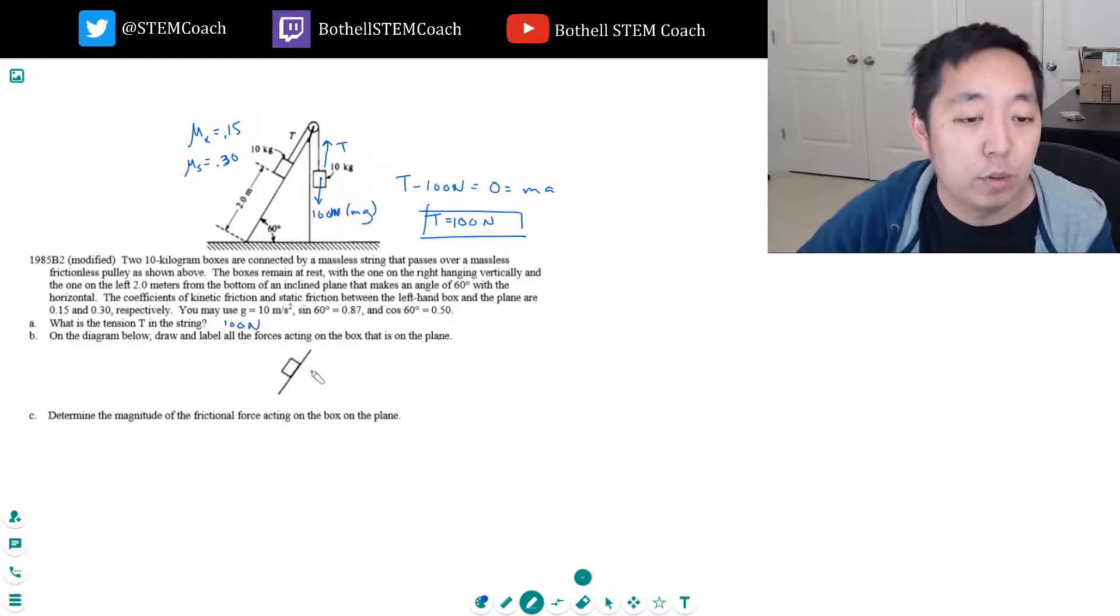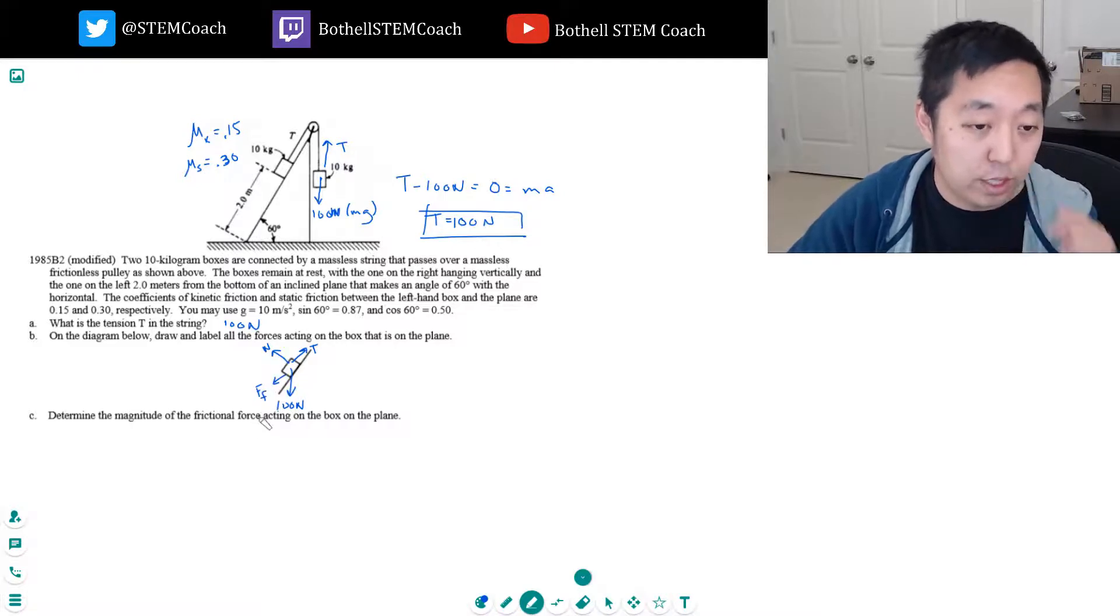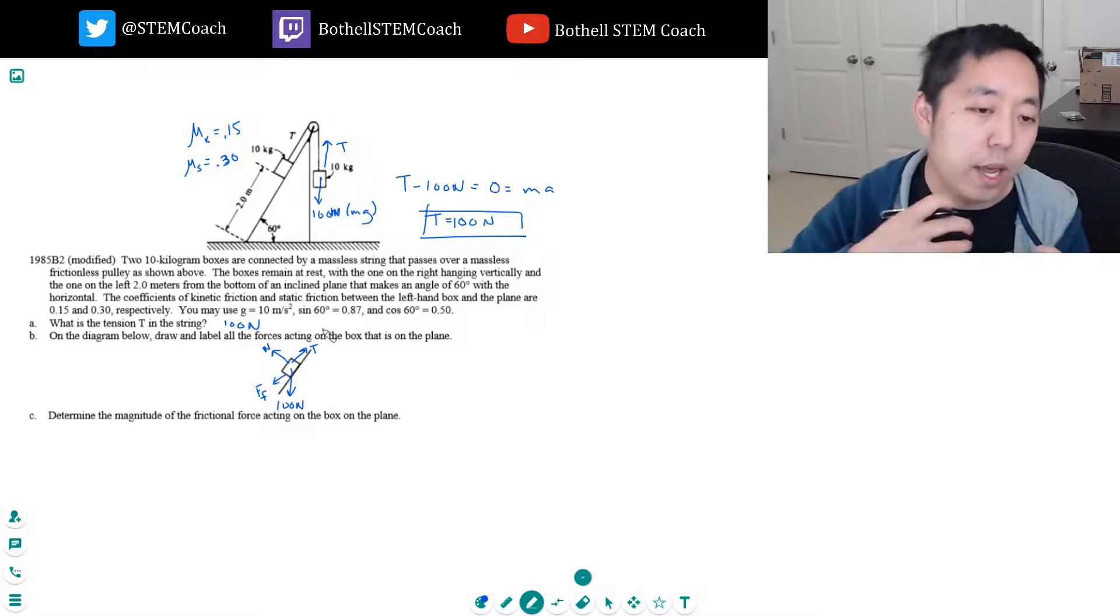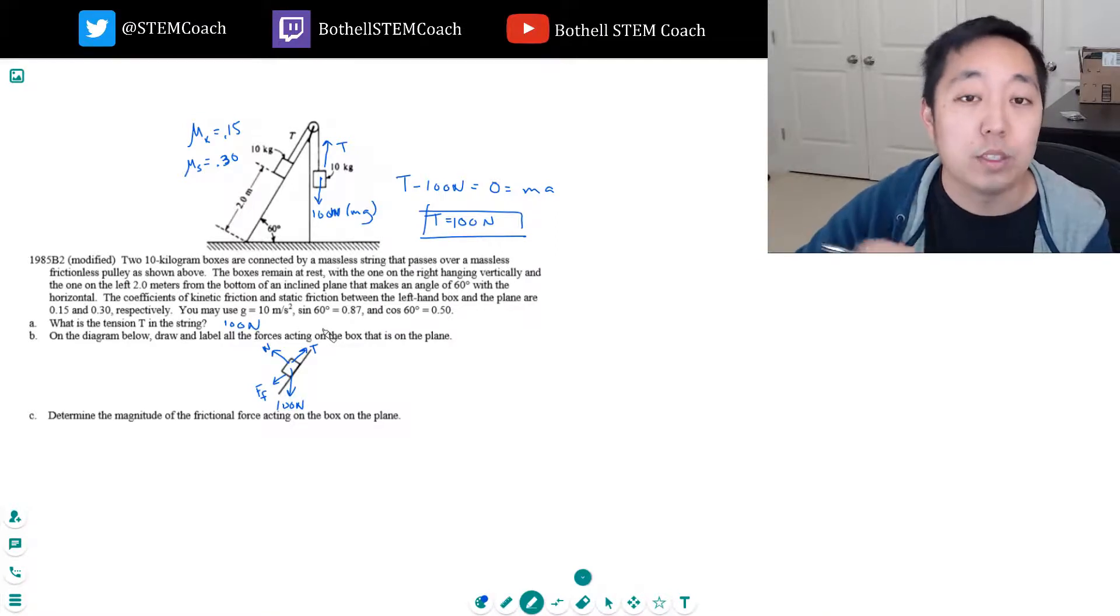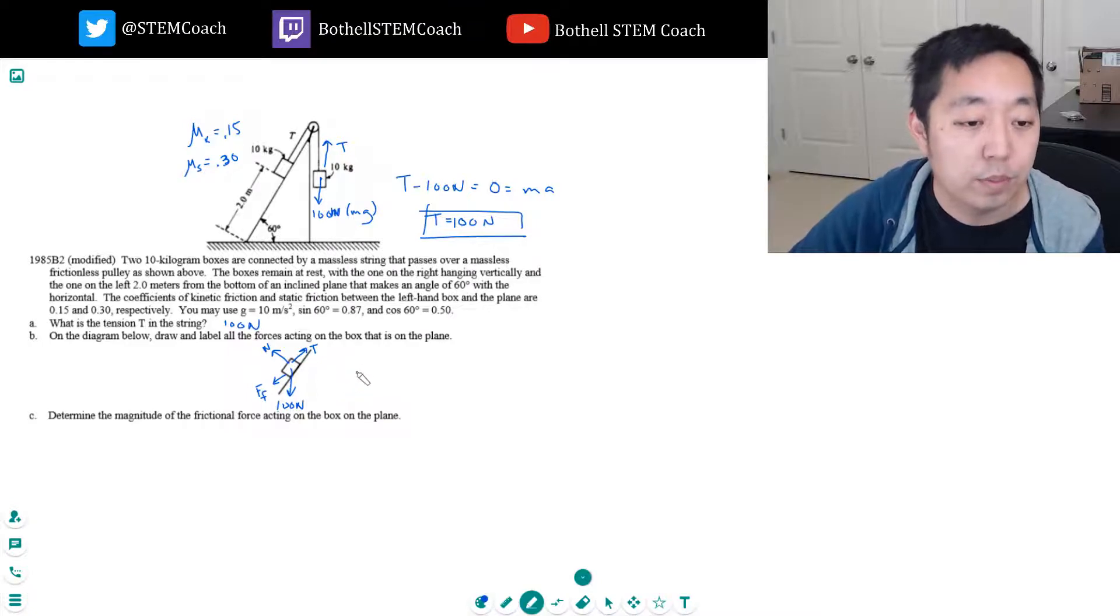On the diagram below, draw all the forces acting on the box that is on the plane. So here we have the same tension. We have 100 newtons down this way. And then it's hard to say, but there's a frictional force probably in this direction. It's actually hard to say which direction, but there's definitely a normal force and there's definitely a frictional force. Whether the force of friction goes this way or that depends on which way it needs to balance all the forces. The frictional force is a reactionary force. It'll react to resist motion, and we don't know which way we tend to have motion at this point.